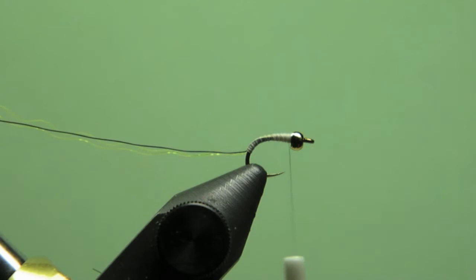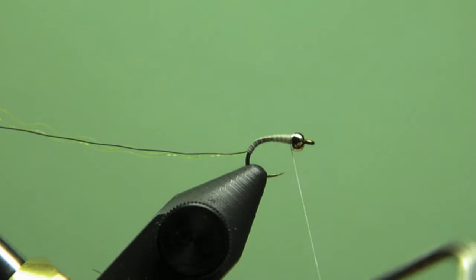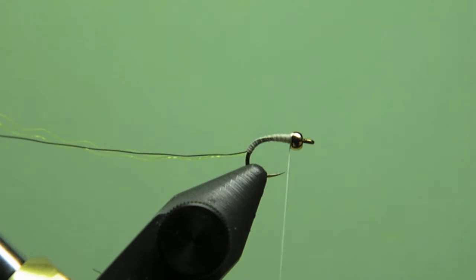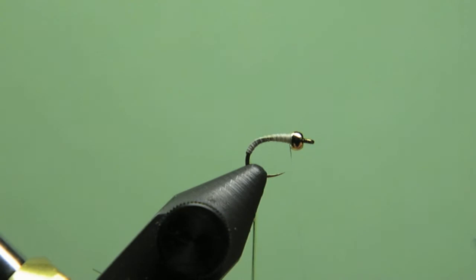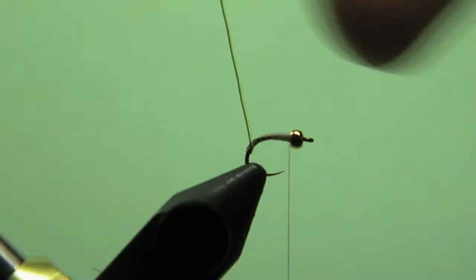One thing I would recommend though is do a little whip finish right there to keep the thread close to the bead. Now I'm going to wrap this material up without making too much of a mess. Start it off straight like that.